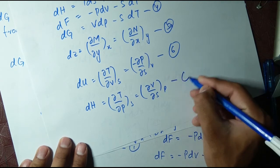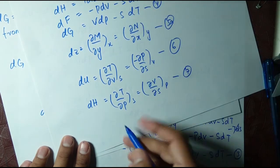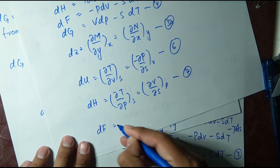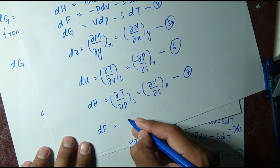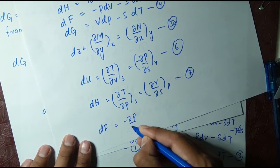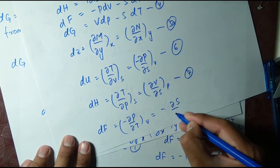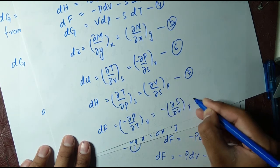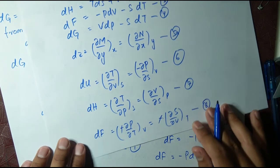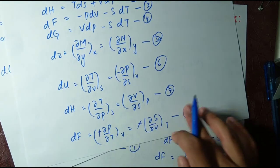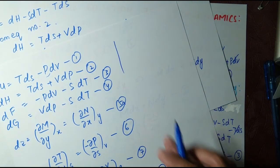Comparing equation five with equation three (dF = −P dV − S dT) gives the third Maxwell relation: ∂P/∂T at constant V equals ∂S/∂V at constant T. The minus signs cancel. This is equation number eight.